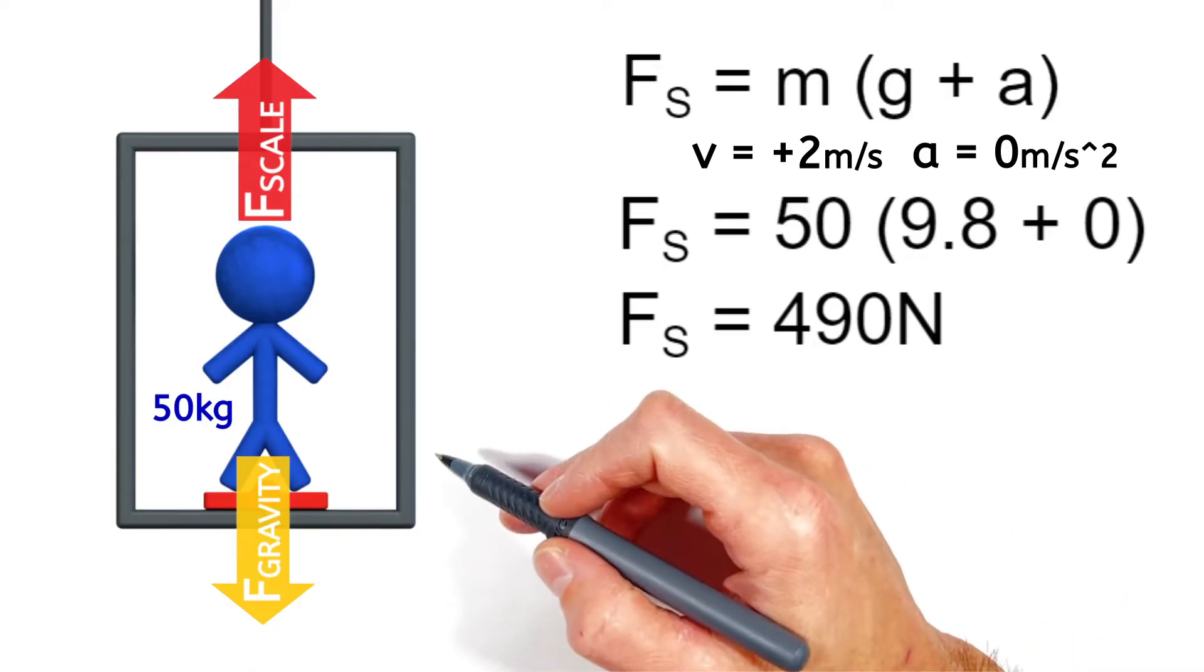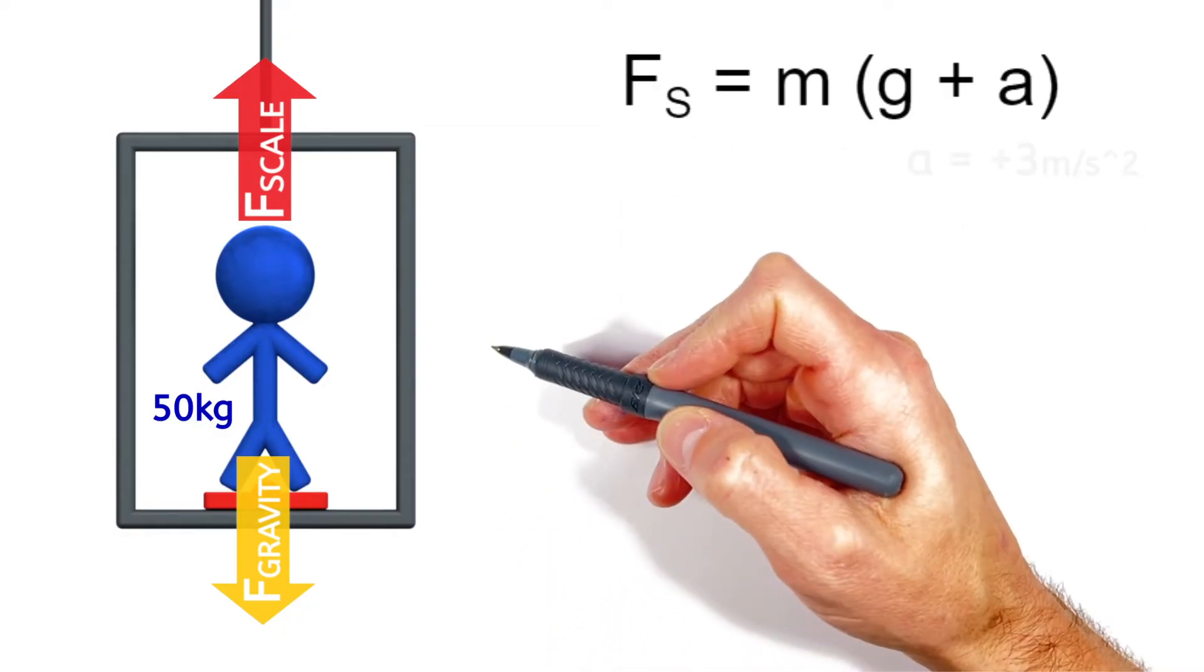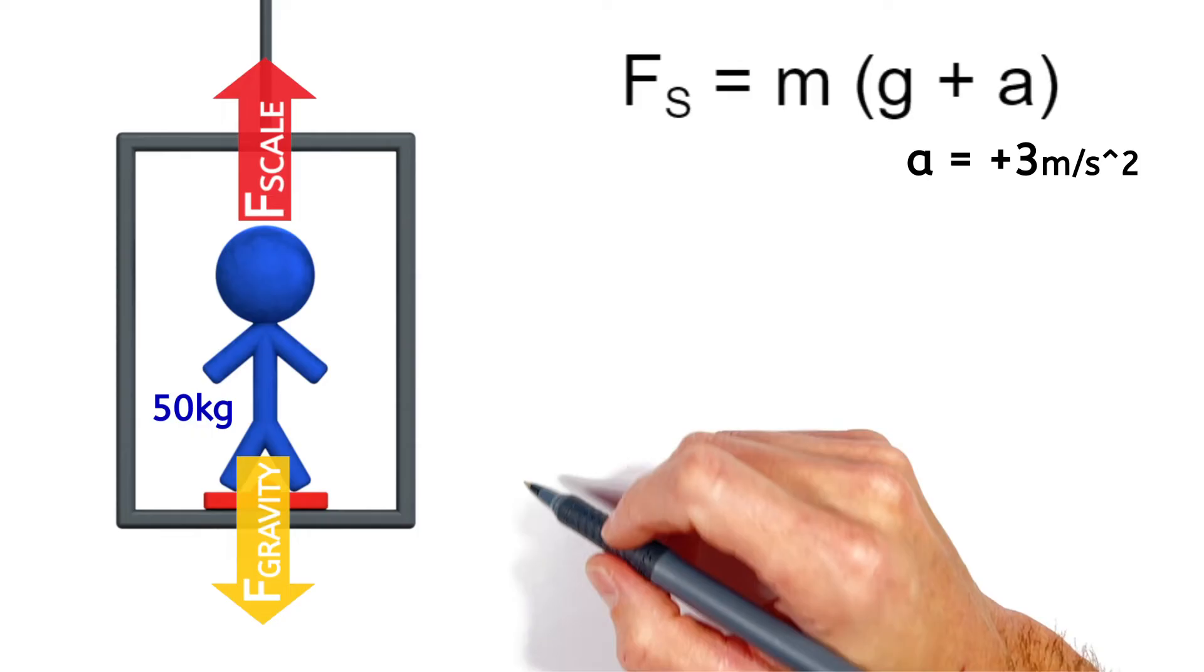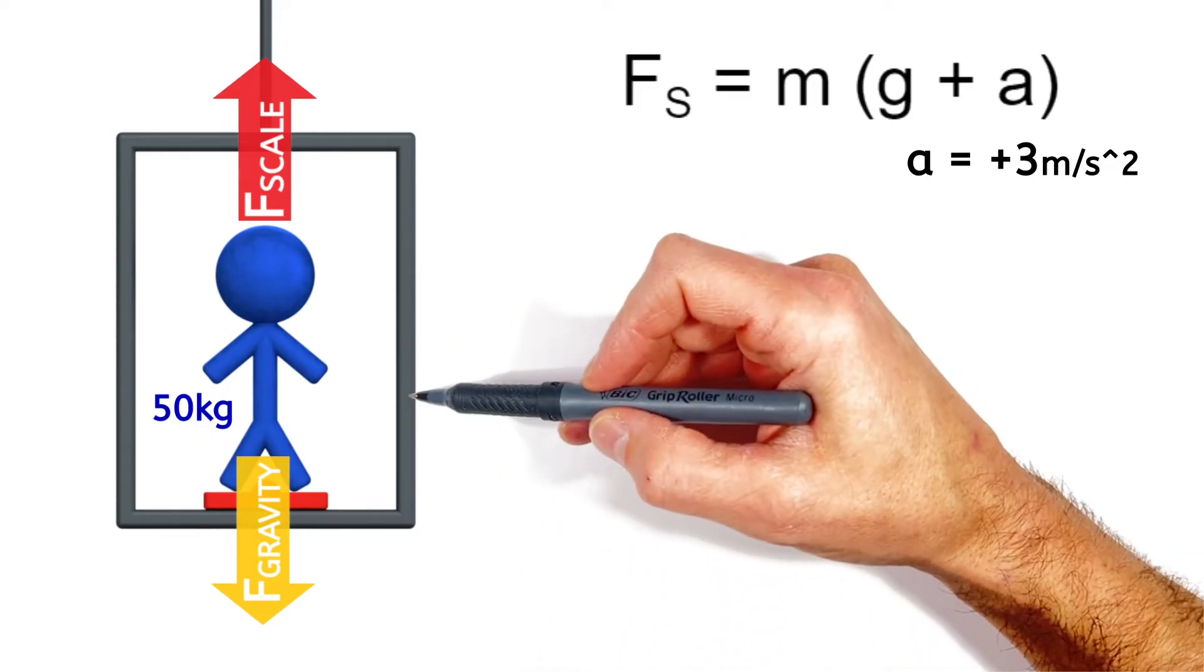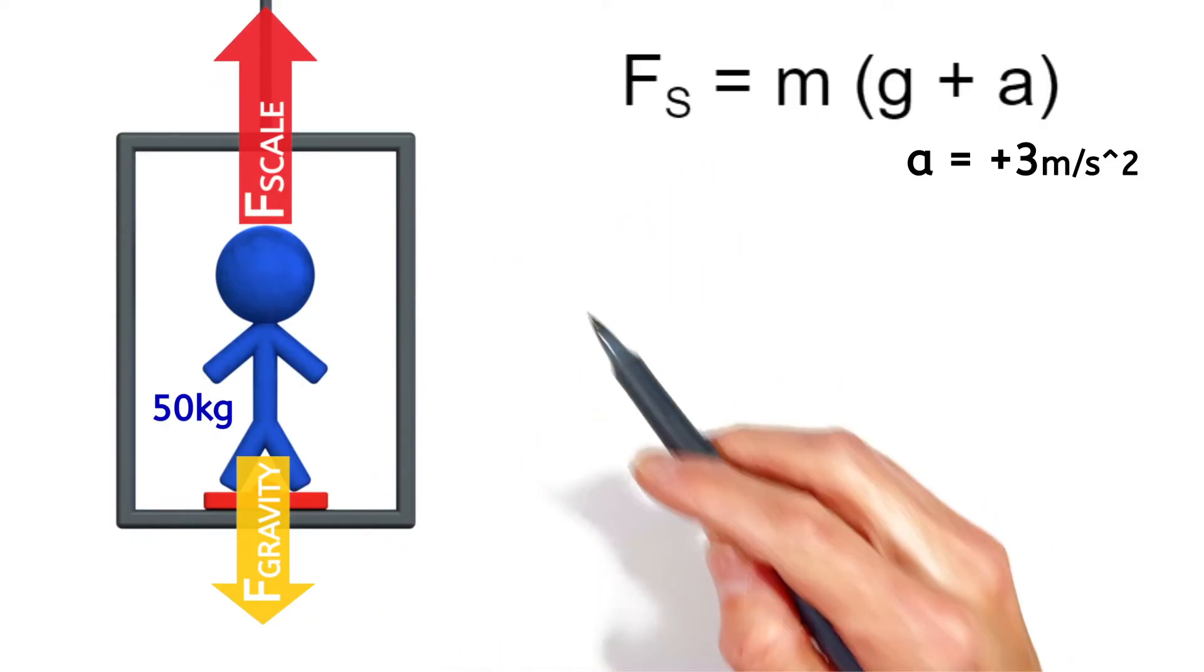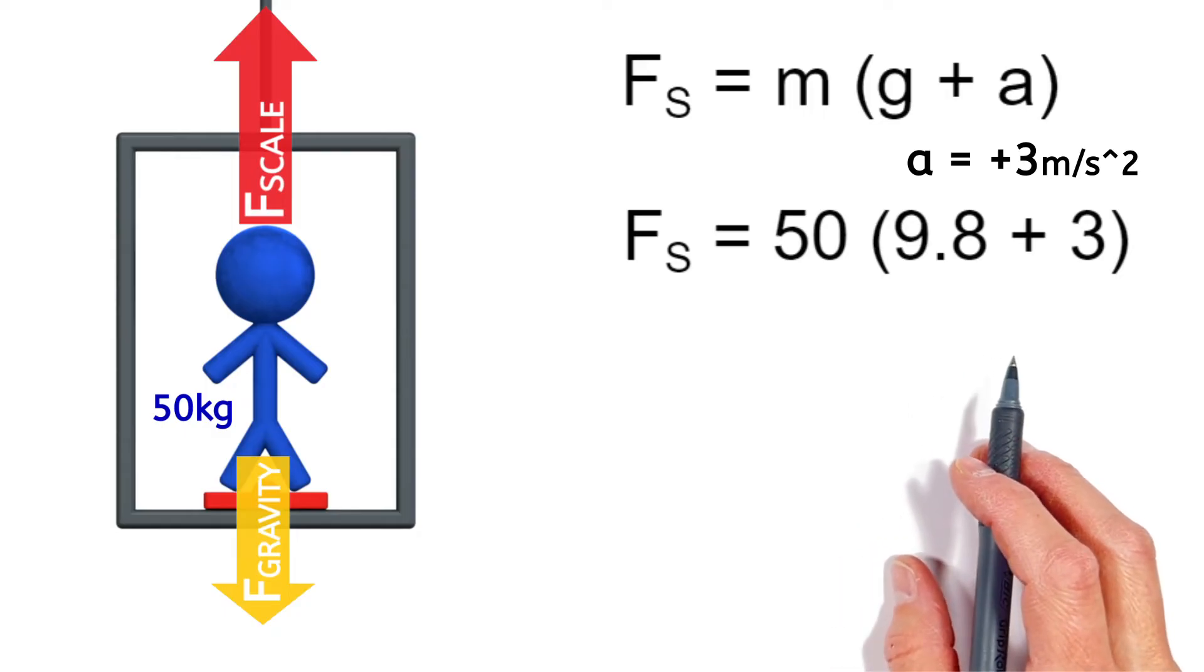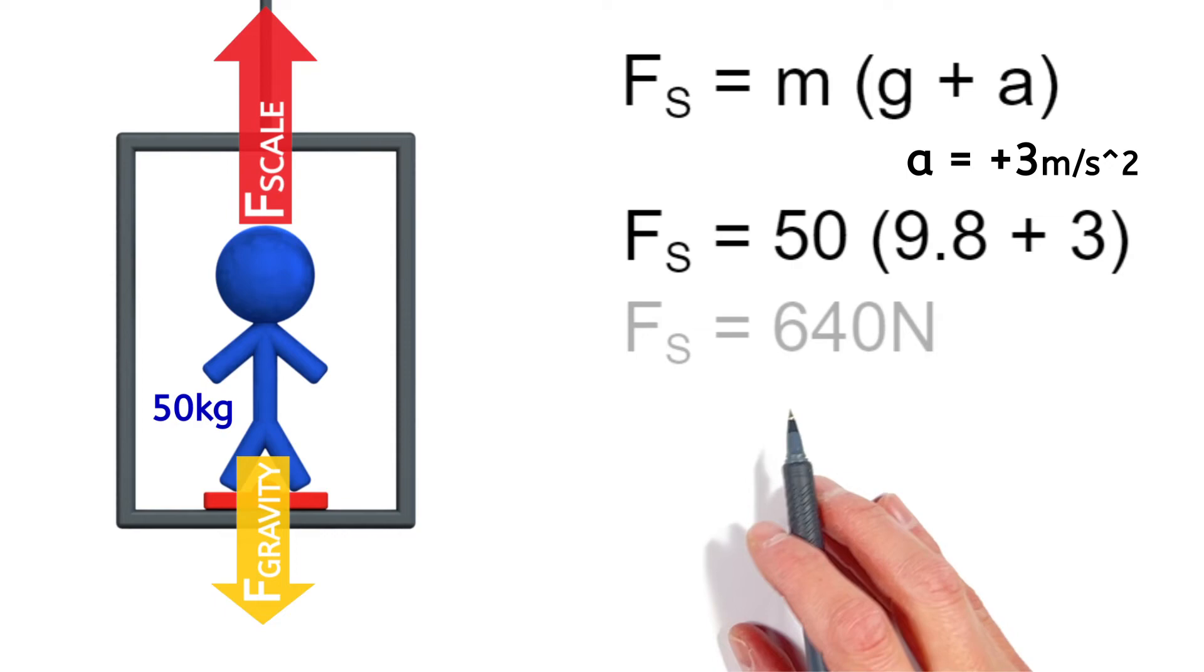So let's change the motion of this elevator again, and this time let's make this elevator accelerate upward at 3 meters per second squared. And this is where things start to get a little weird. So in order to make the person accelerate upward, there has to be more force up on the person than down. Or going back to our equation, if you plug in a is positive 3, and say it's positive because it's upward, the force on the scale will be 640 newtons.